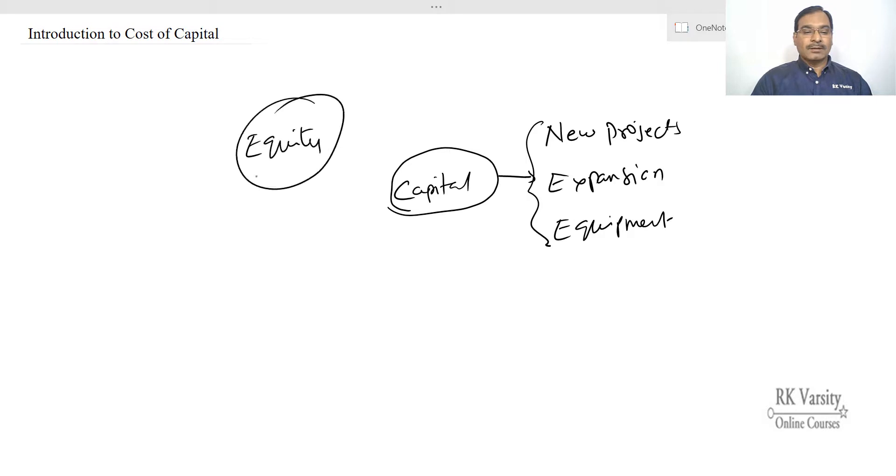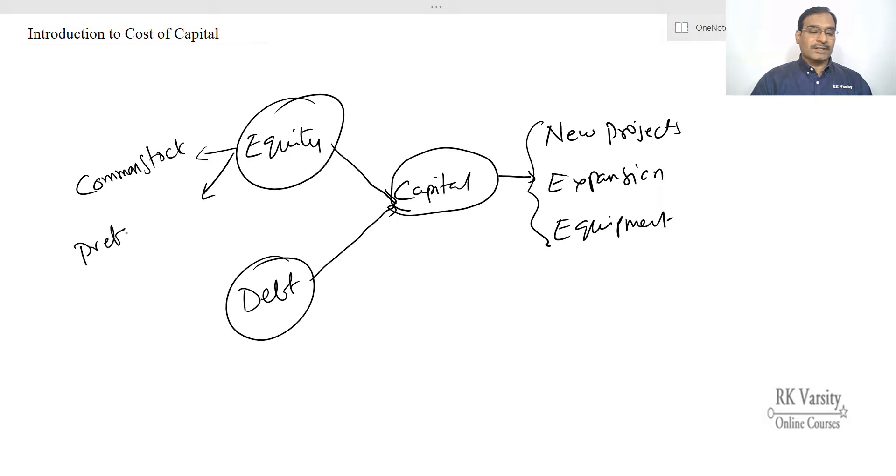Companies source this capital in various forms. Majorly, companies source capital in the form of equity and debt. In equity, companies may source through common stocks or preference stock by issuing shares. For existing companies, there may be retained earnings. When it comes to debt, companies source it in the form of debentures, by issuing long-term bonds, or by borrowing loans from banks and financial institutions.